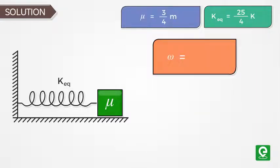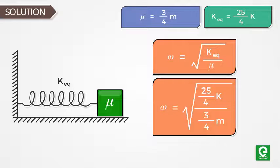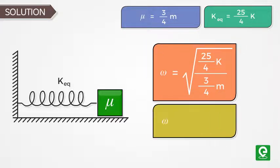Frequency of oscillation is equal to square root of spring constant divided by reduced mass. On substituting the value of spring constant and reduced mass, we get frequency of oscillation equal to 5 times root(k/3m).